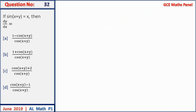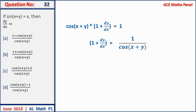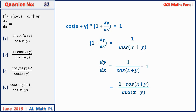Question 32: if sin(x + y) = x, find dy/dx. Differentiating: cos(x + y)(1 + dy/dx) = 1. So 1 + dy/dx = 1/cos(x + y), giving dy/dx = 1/cos(x + y) − 1 = (1 − cos(x + y))/cos(x + y). Answer A.